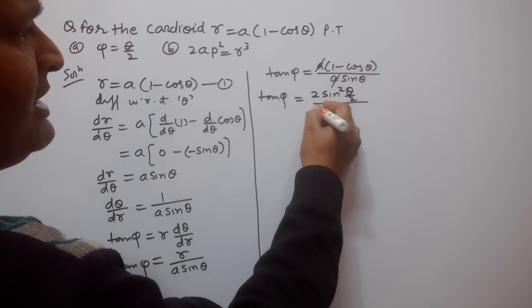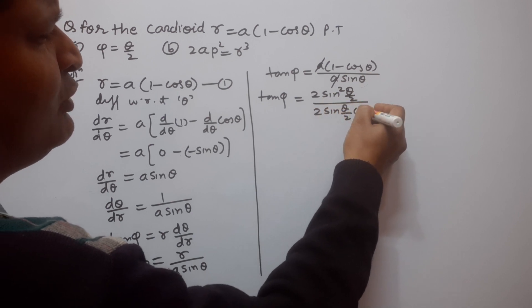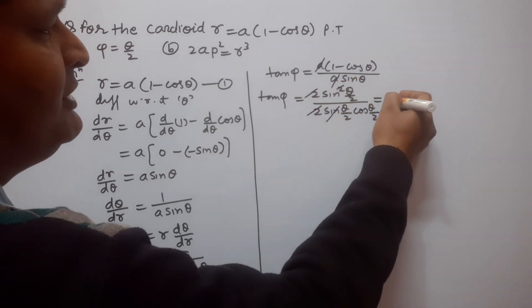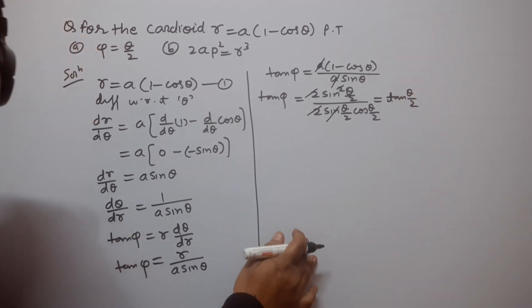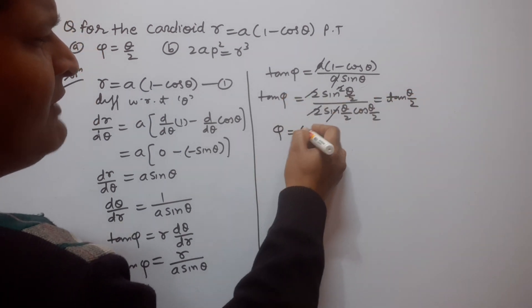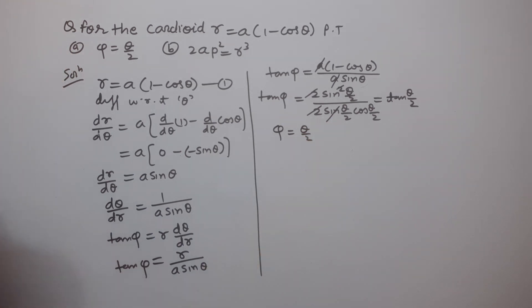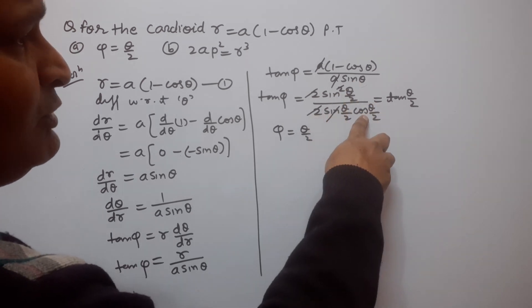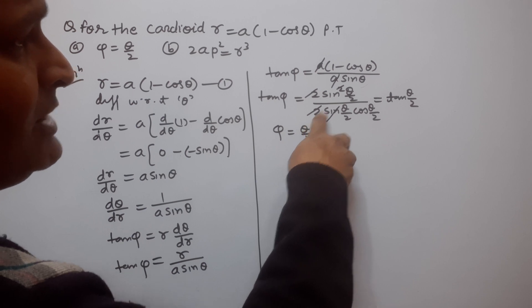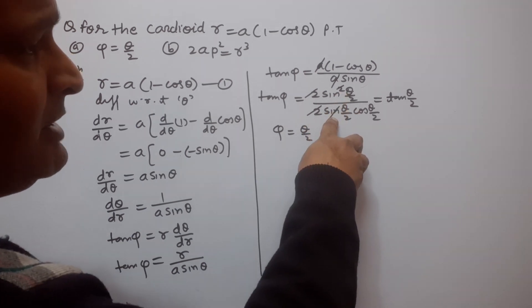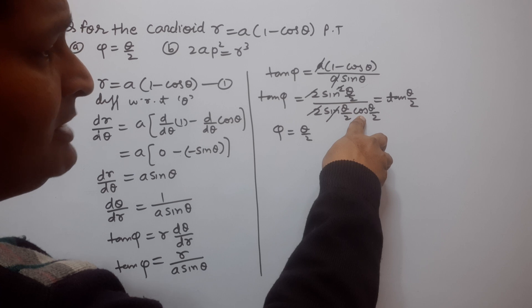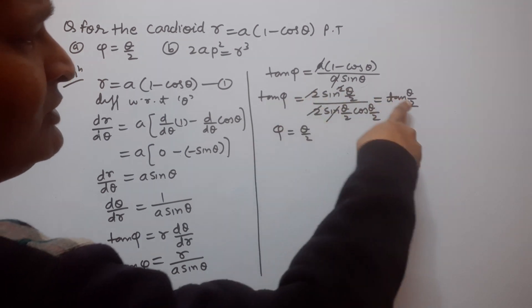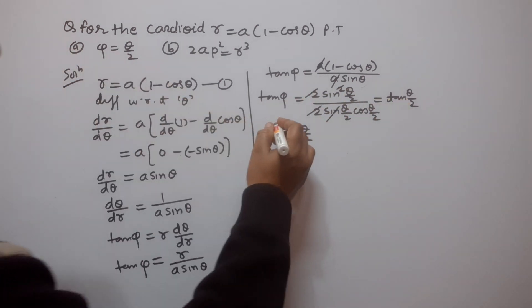Using the half-angle identities, 1 minus cos θ equals 2sin²(θ/2) and sin θ equals 2sin(θ/2)cos(θ/2), the a's cancel, giving sin(θ/2)/cos(θ/2), which equals tan(θ/2). So tan φ equals tan(θ/2), therefore φ equals θ/2. The first proof is complete.